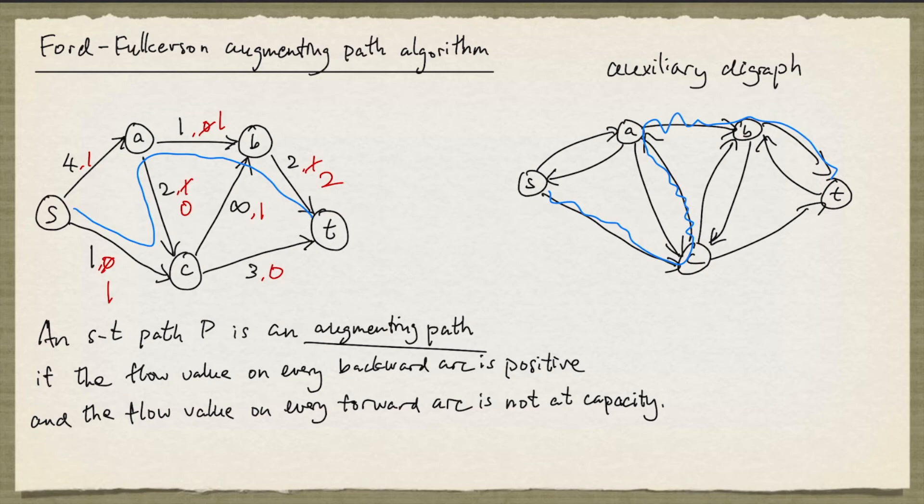The Ford-Fulkerson augmenting path algorithm is simply keep finding the augmenting path. Each time an augmenting path is found, we increase the value of the s-t flow along the path as much as possible, until we cannot do this anymore. If the finite arc capacities are rational numbers, this algorithm will terminate.